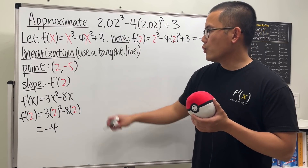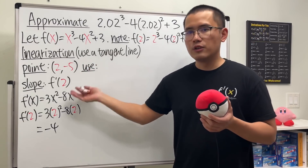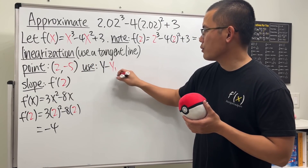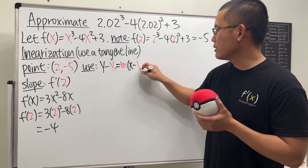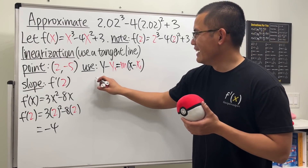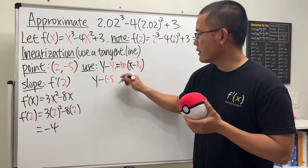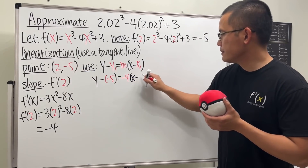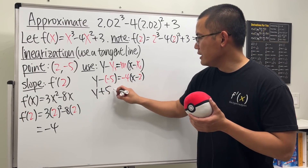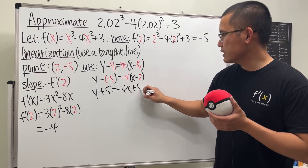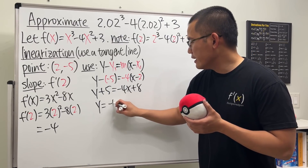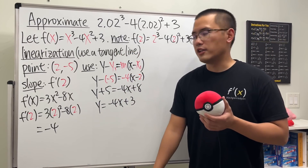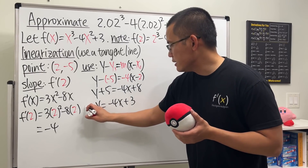Now we use point-slope form: y - y₁ = m(x - x₁). With point (2, -5) and slope -4: y - (-5) = -4(x - 2), which gives y + 5 = -4x + 8, so y = -4x + 3. This is the tangent line equation, and that's the linearization L(x) = -4x + 3.